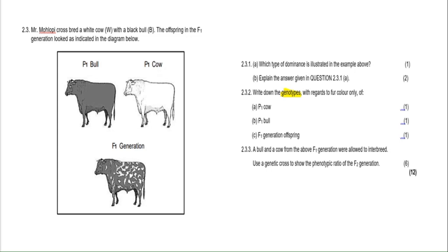Three things to remember for genotypes: one, don't think about the color or what it looks like; two, think about the genes; three, give the letters — always two letters. For part A, the P1 cow is the white cow, so the genotype uses W. Because it's dominant and we assume homozygous, it's W capital W — WW. For the P1 bull, you see capital B, so that's BB.